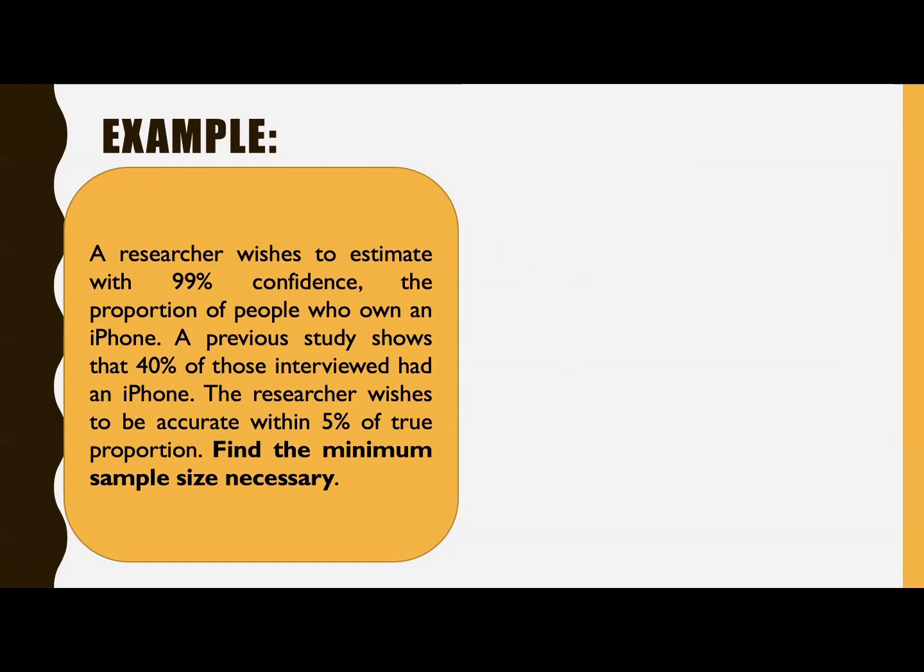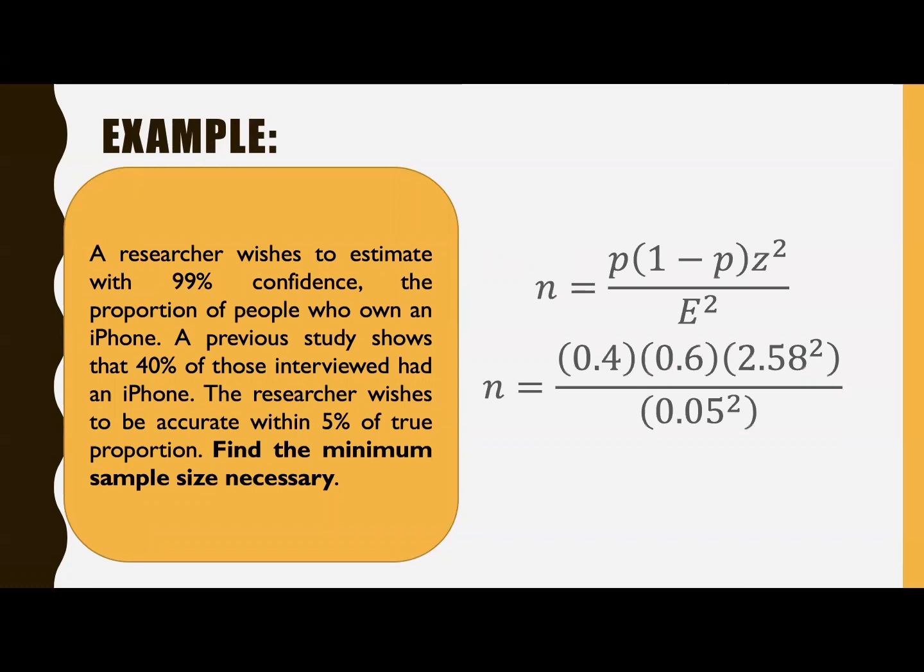So you look for the minimum sample size necessary. Again, we have the formula P times 1 minus P multiplied by the standard score squared divided by the margin of error squared. So substitute here. Where did you get this P? Since that is prior knowledge, we have 40% of those interviewed in the previous study.